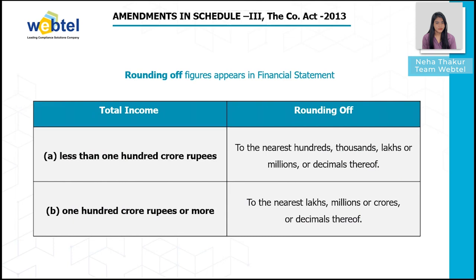The first amendment is rounding off figures appearing in financial statements. Rounding off is mandatory for Division 1 and Division 2 companies. It needs to be done based upon the total income of the company rather than turnover. If the company's total income is less than 100 crore rupees, rounding off shall be to the nearest hundreds, thousands, or lakhs. If the company's total income is 100 crore rupees or more, rounding off shall be to the nearest lakhs or multiples thereof.